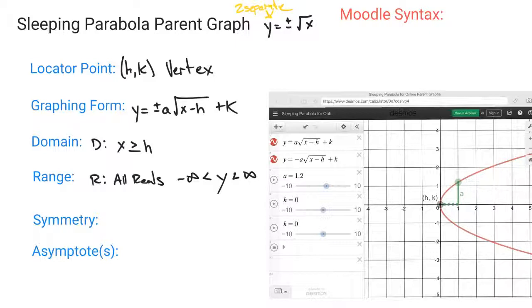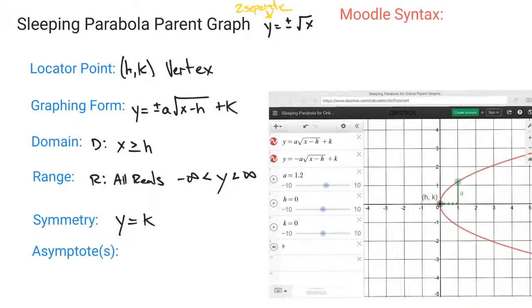Now we do have a line of symmetry. That line of symmetry is going to be wherever your y value is, so wherever y equals k. So as I drag this graph up, you can see that you have that symmetry from the top and the bottom.